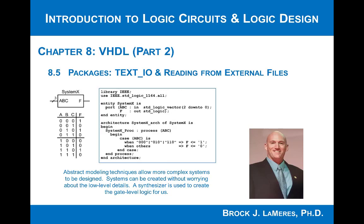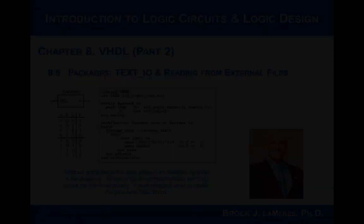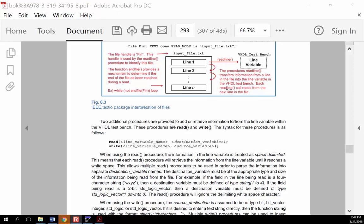Let's take a look at reading from a file using the text IO packages within a VHDL testbench. The theory of how reading works is that you assume you have some text file. To start off, let's have it contain ones and zeros — it's just an ASCII text file, and each line will represent some piece of information that you're going to drive into a DUT.